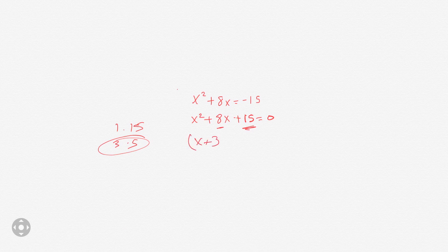So we would have x plus 3 times x plus 5 equals 0. Then we set each factor to 0, so this one gives x equals negative 3, and this one gives x equals negative 5. And that's the answer for that one.